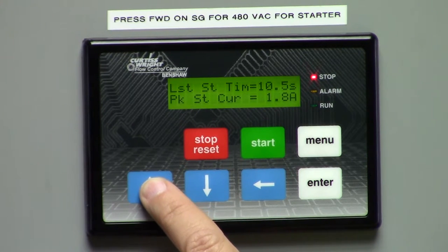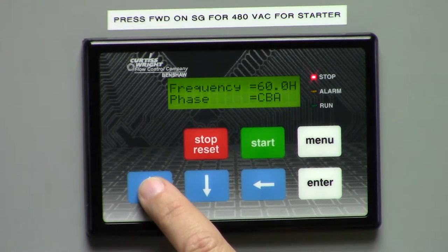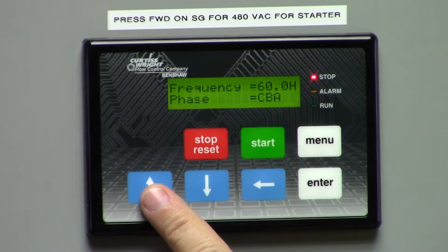Also, as you go up through, it'll tell you the last start time, meaning how long it took to start and come up to full speed, and the peak current that it drew during that start. It shows you the frequency. It also tells you the order of the phase that's feeding the starter.